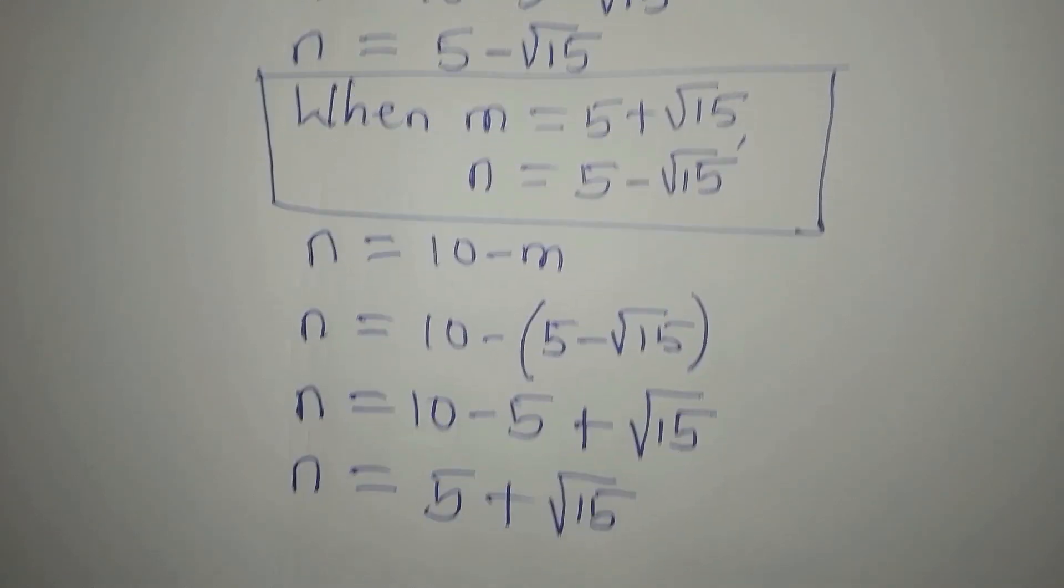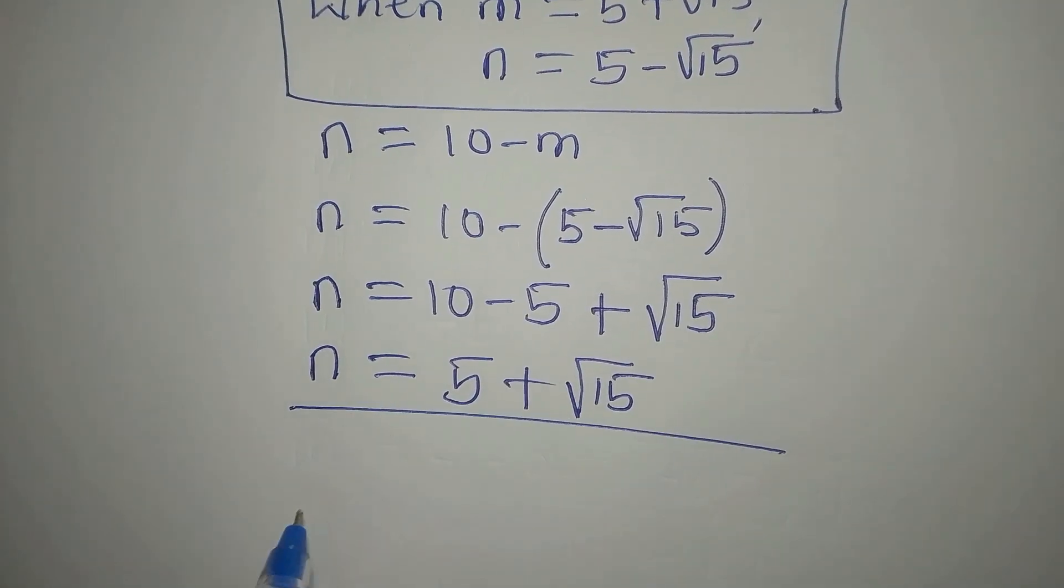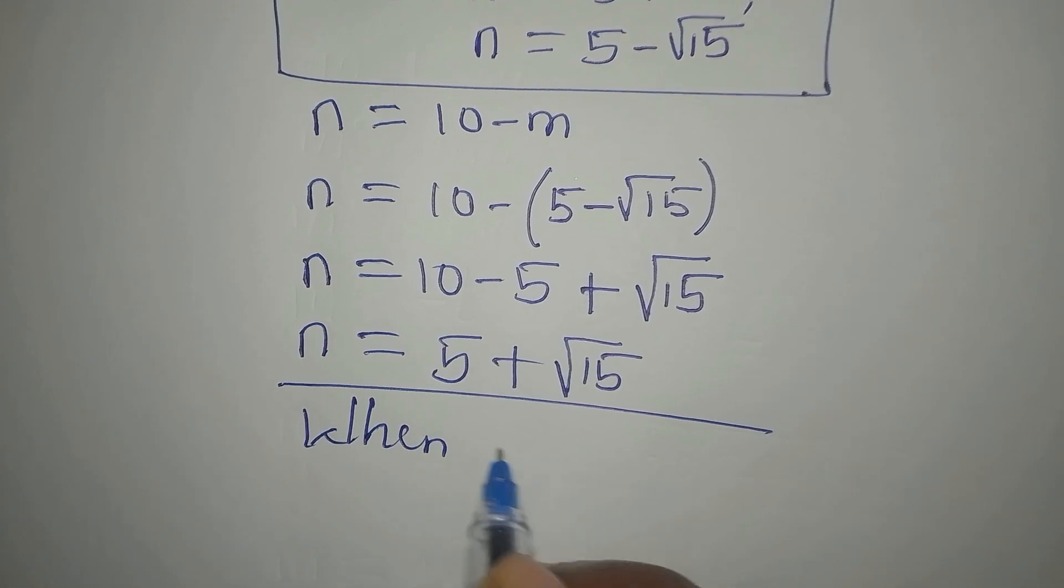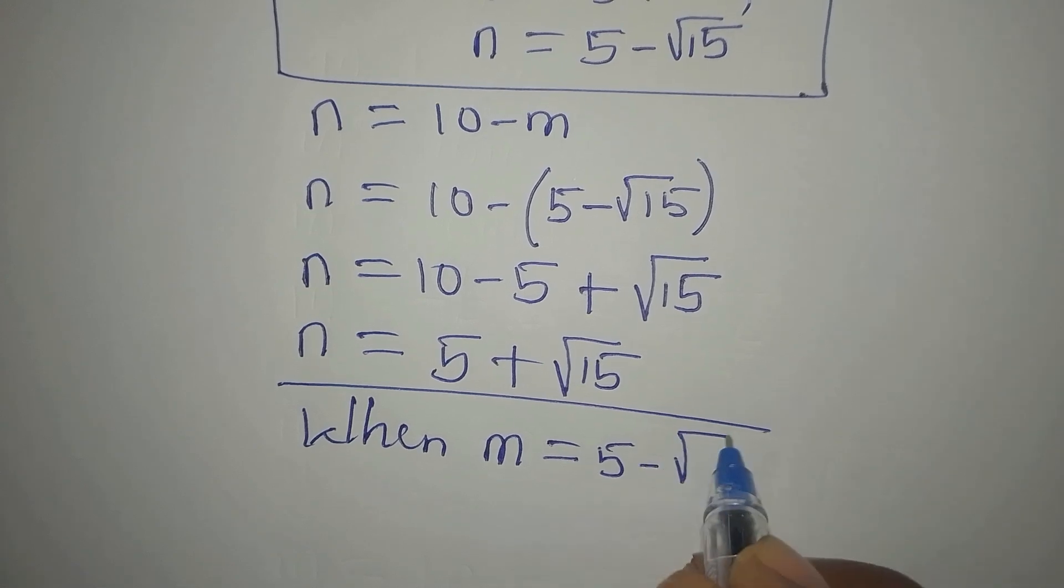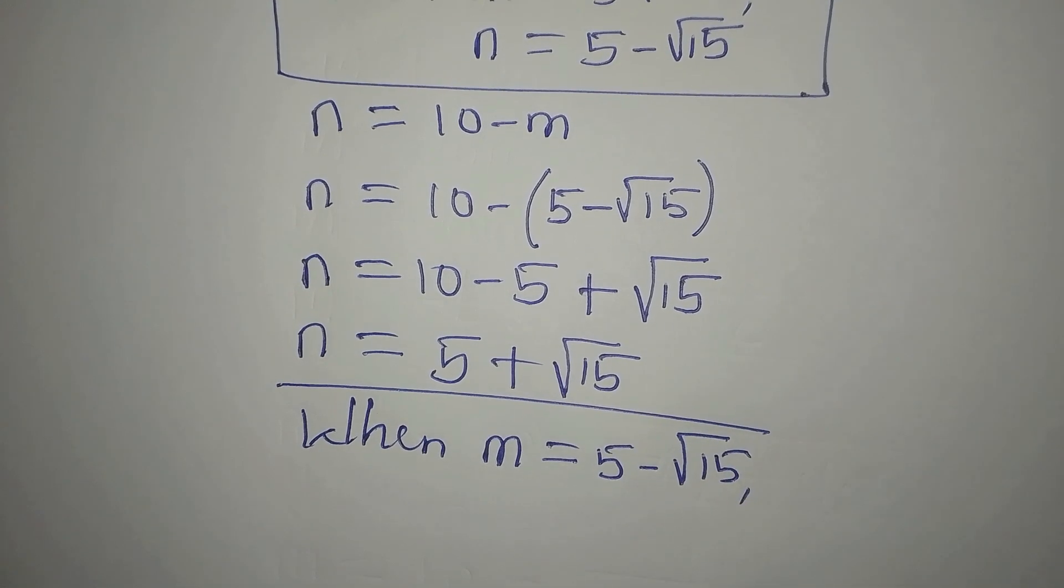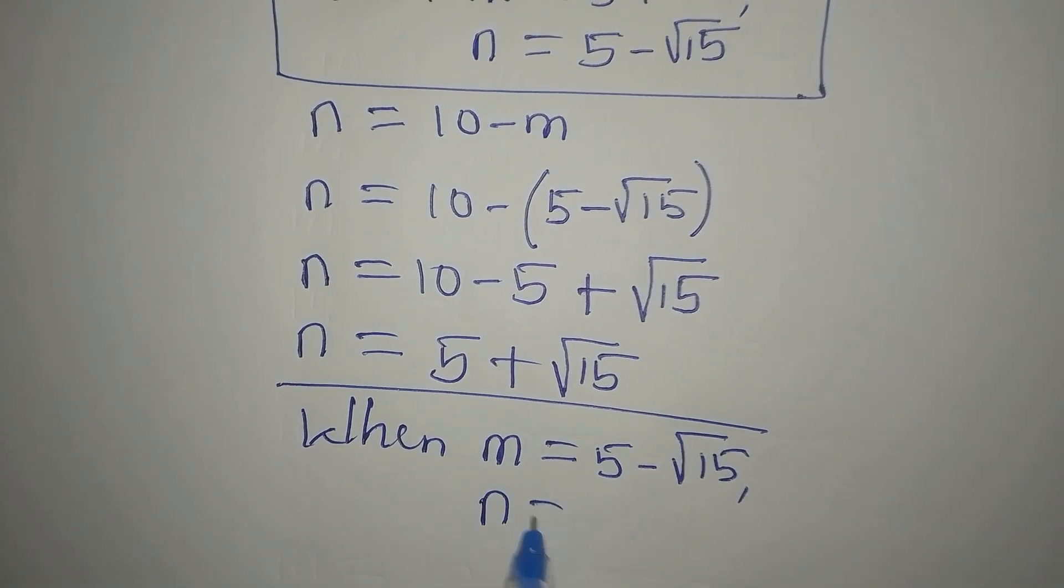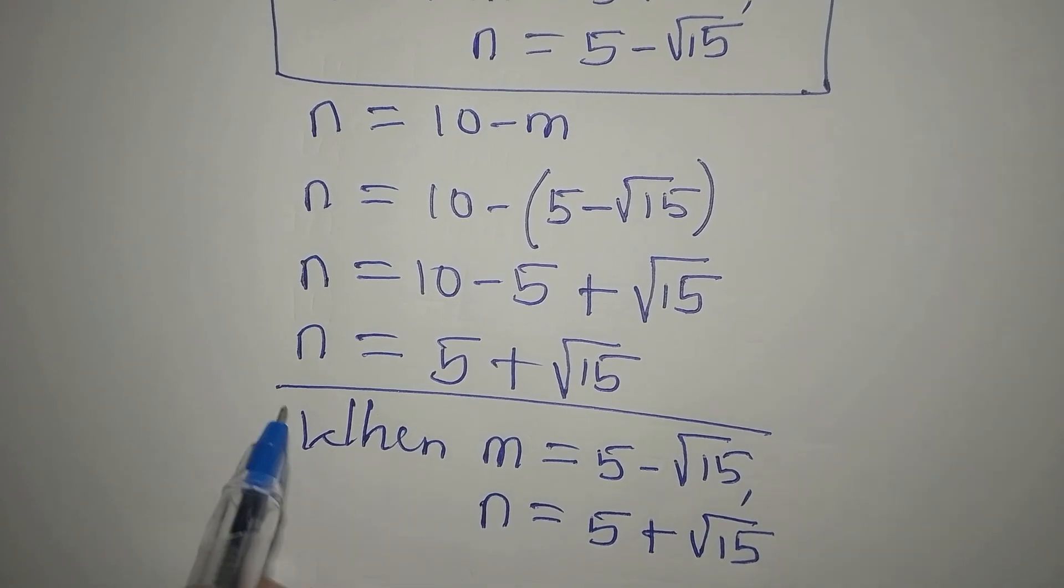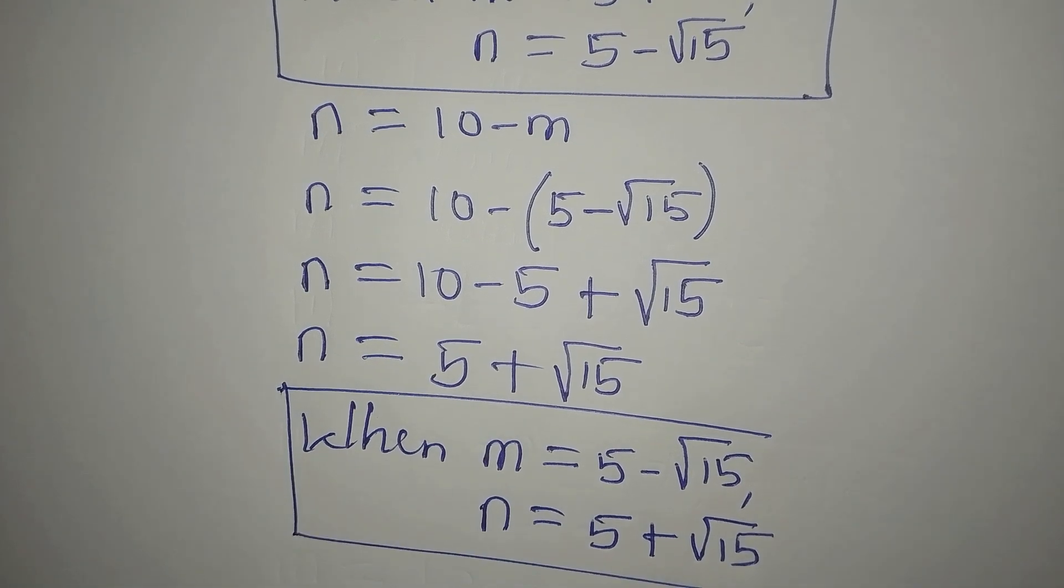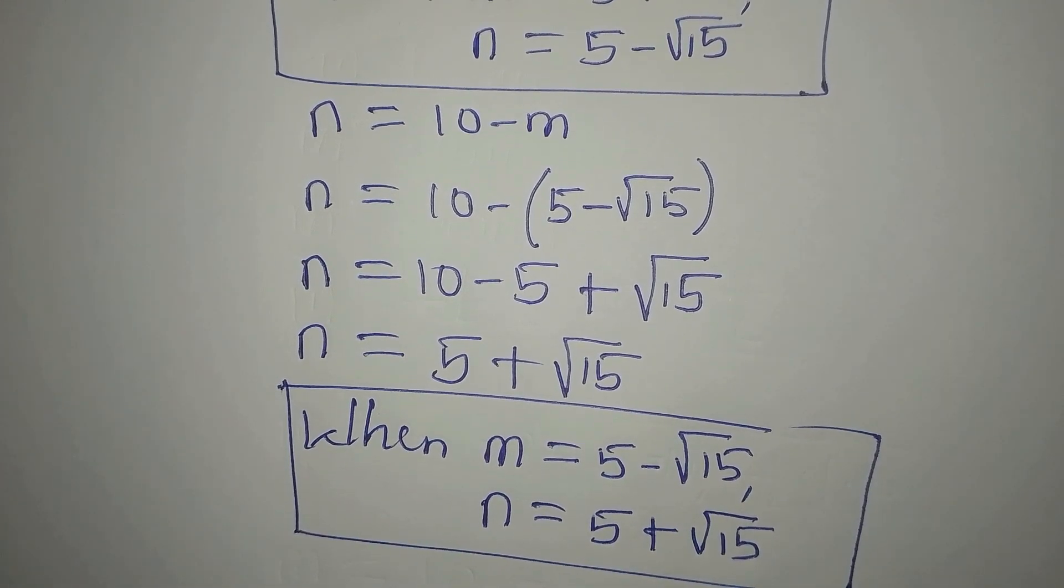So from here again, we can now conclude that when m equals 5 minus root of 15, n equals 5 plus root of 15. So by this, we have solved the equation completely.